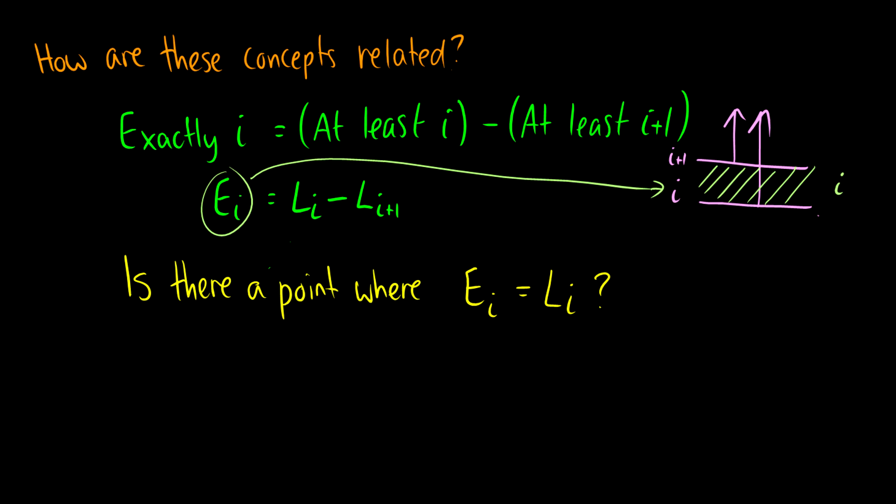So is there a point, and this is a question, where exactly I conditions is the same as at least I conditions. Now think about this. If we need to do an inductive proof, and we kind of already have the inductive step here, this is sort of our base case. So we need to start somewhere. So where are we going to start? Well, if exactly I is equal to at least I, that means that at this I here, there's nothing above I.